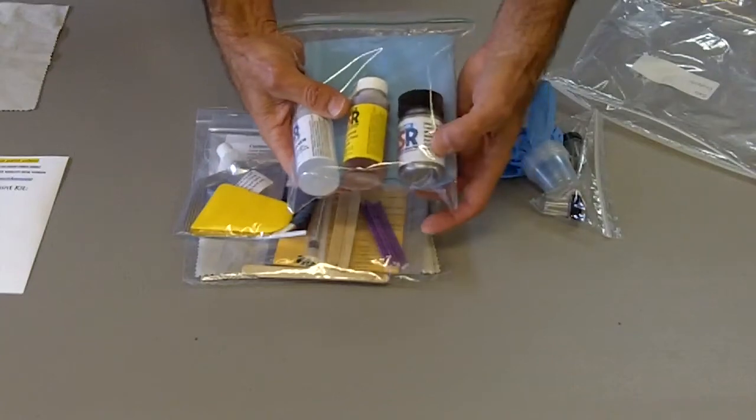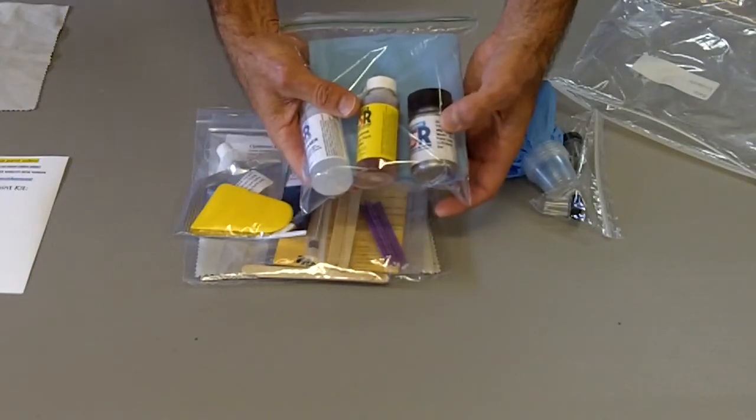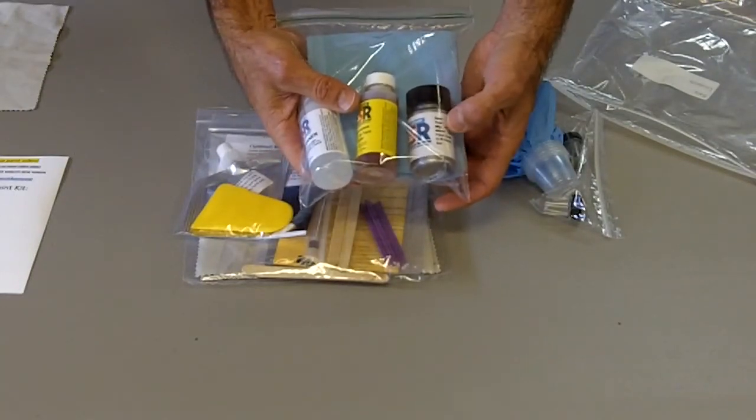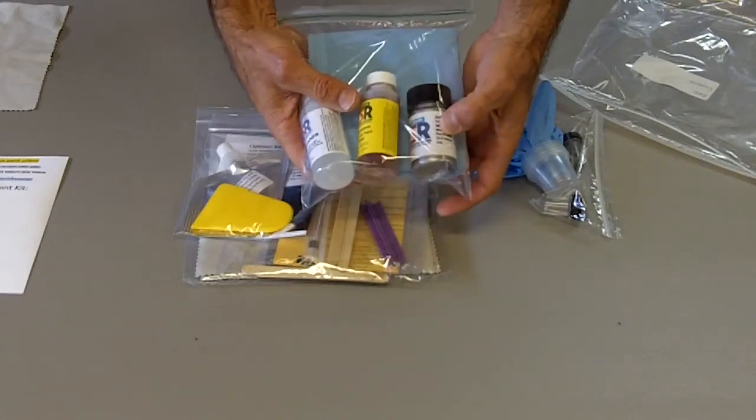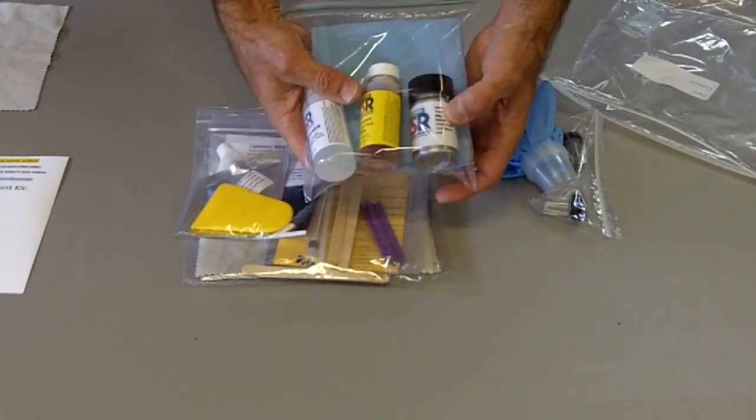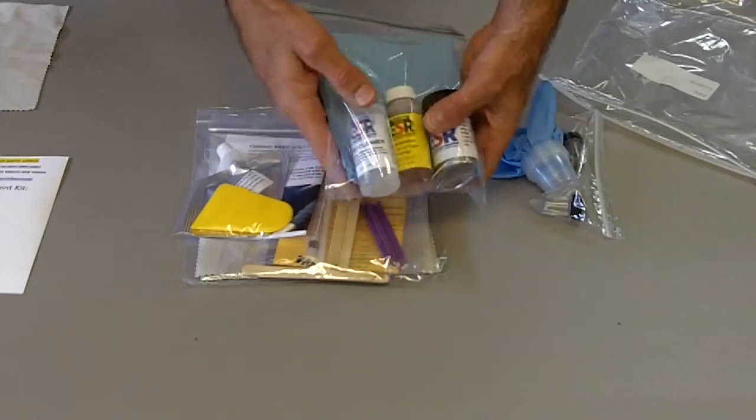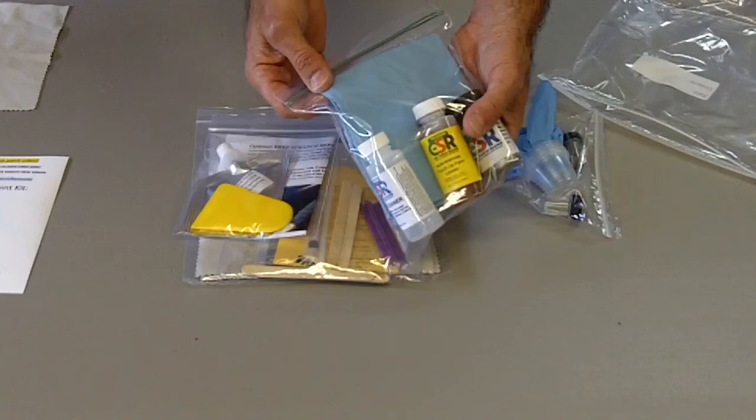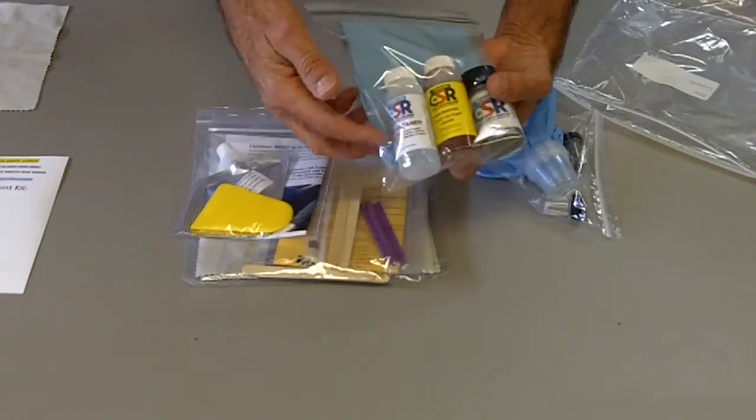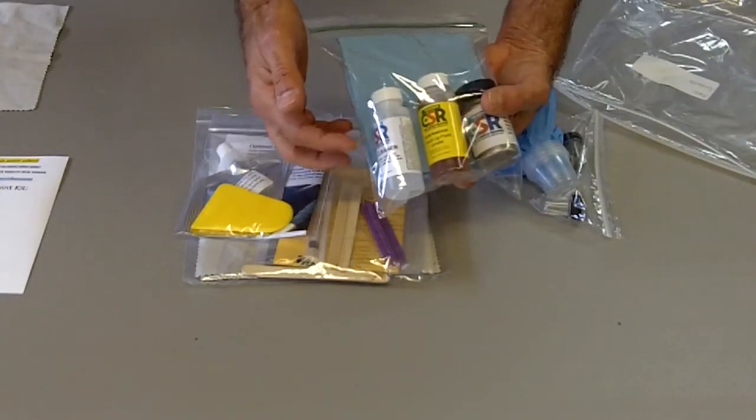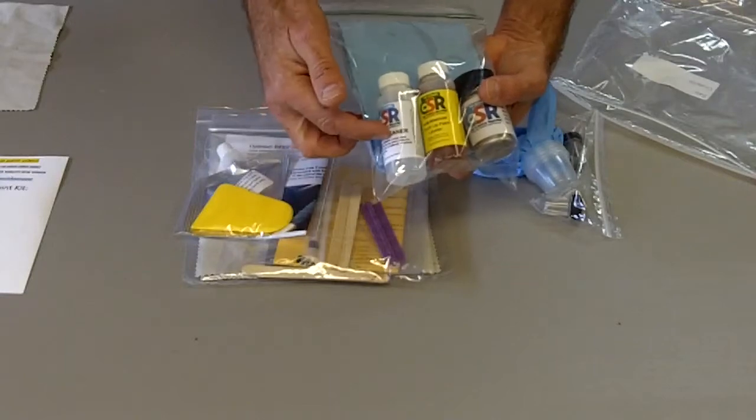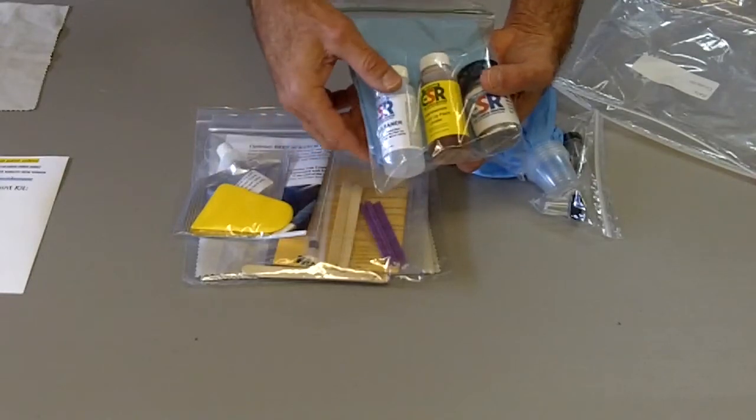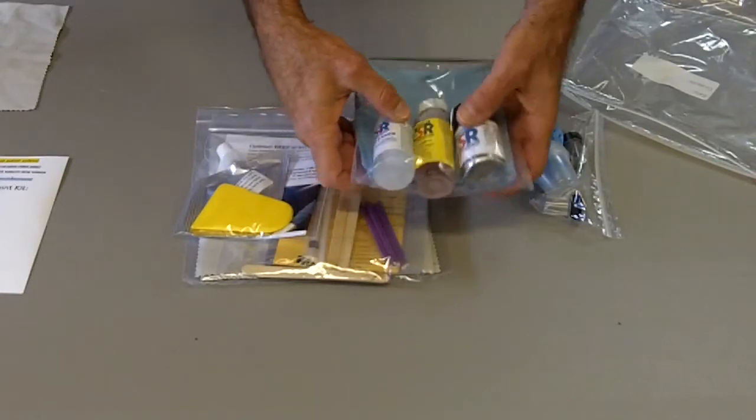And then also there's two ounces of custom mixed OEM paint formula that is made to order specifically for your order. And then also in this bag, there's a couple industrial heavy-duty paper towels to clean up a mess. Sometimes they're really nice to use where you just moisten it with the pre-cleaner to de-wax an area that you're going to do a touch-up paint repair on.